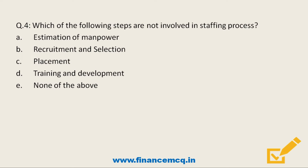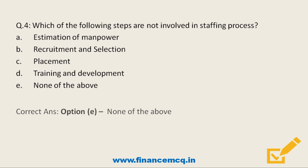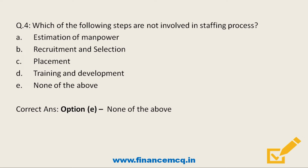Next question: which of the following steps are NOT involved in the staffing process? Option A: estimation of manpower. Option B: recruitment and selection. Option C: placement. Option D: training and development. Option E: none of the above. All of these steps are involved in the staffing process, so the correct answer is Option E — none of the above.